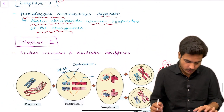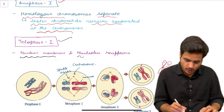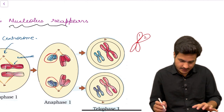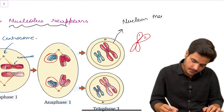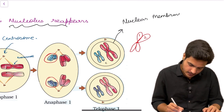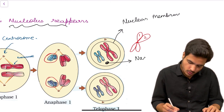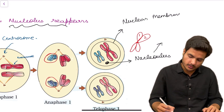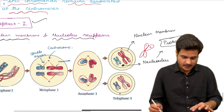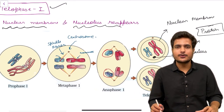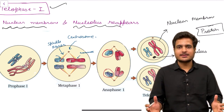The last stage is telophase 1, in which the nuclear membrane and nucleolus reappear. The nuclear membrane reforms and the nucleolus — the spherical structure that synthesizes ribosomal RNA — reappears, with its number depending on the protein requirements of the cell. With this, meiosis 1 is complete. Thank you for watching; if you liked the video please hit the like button.